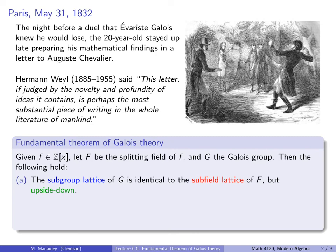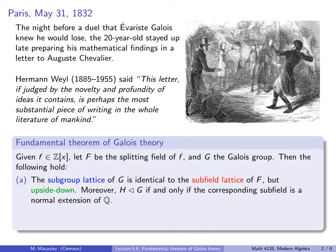And not only is it identical, but the degrees of the extensions in the subfield lattice are the same as the index of the subgroups in G, as we've seen and as we'll see more examples in this lecture. Moreover, a subgroup H is normal in G if and only if the corresponding subfield is a normal extension of Q — something we saw in the previous lecture.